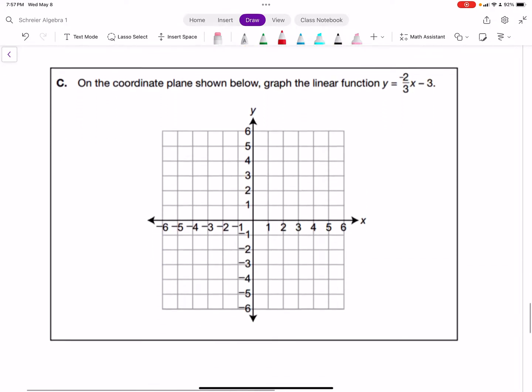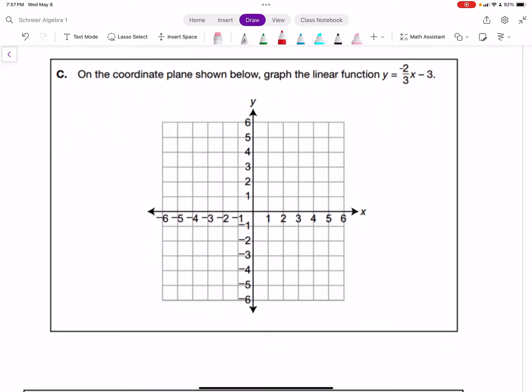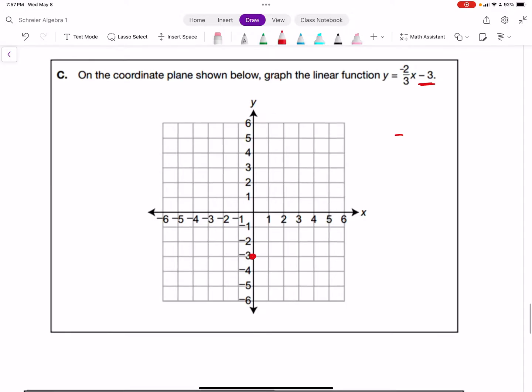Part C is pretty ordinary: graph the linear equation. Start by graphing the y-intercept at -3. Then use our slope -2/3 to find more points: down 2 and right 3 from the original point. It's nice to go in the opposite direction: up 2 and left 3. We can do it again, then draw a line through there. That's a standard Algebra 1 question.